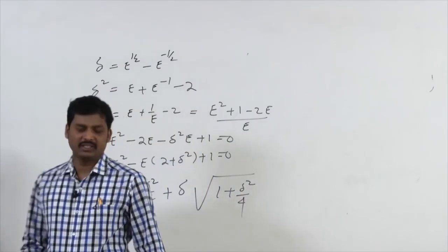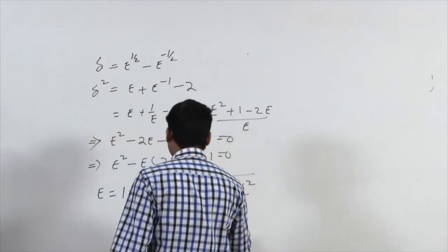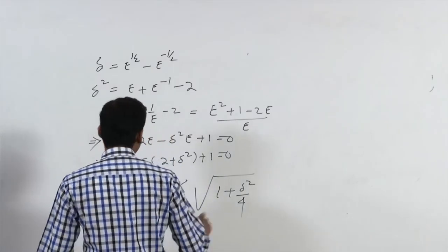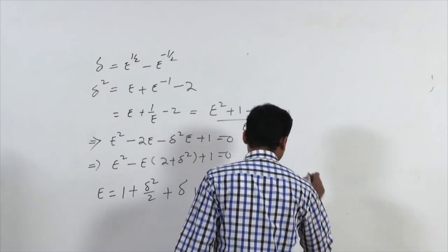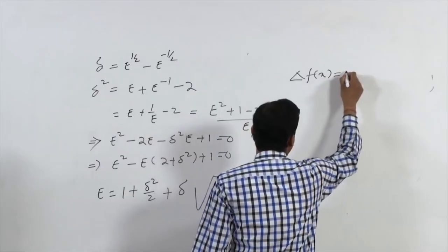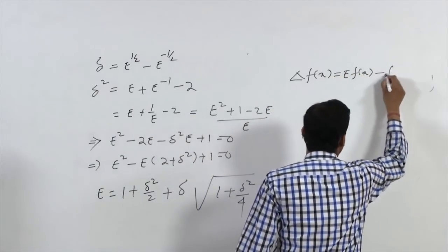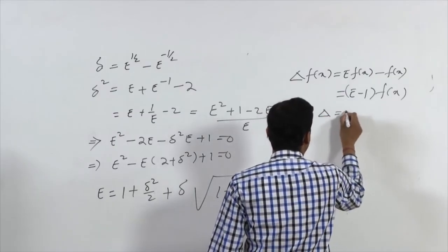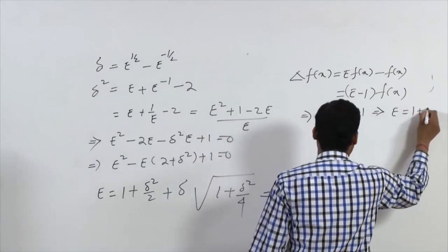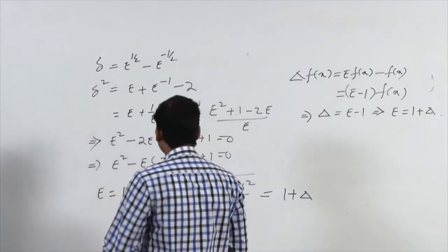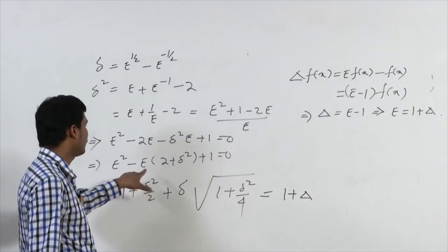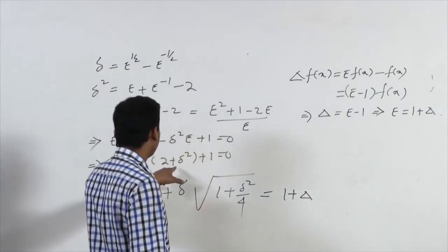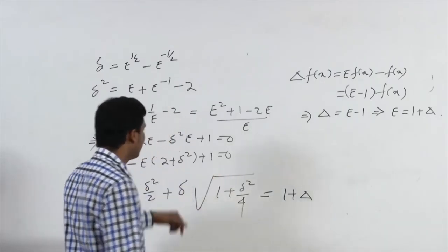This gives E in terms of central difference operators. To express E in terms of the forward difference operator: since delta = E−1, we get E = 1+delta. Using the quadratic formula with A=1, coefficient (2+δ²), and C=1 gives the root for E in central difference form.